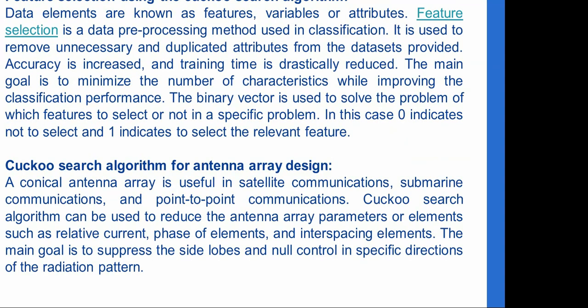One application is feature selection using the Cuckoo Search Algorithm, widely used in data mining and machine learning. Data elements — known as features, variables, or attributes — are preprocessed to remove unnecessary and duplicated attributes. This increases accuracy and reduces training time. The main goal is to minimize the number of features while improving classification performance, using a binary vector where 0 indicates not selected and 1 indicates selected.